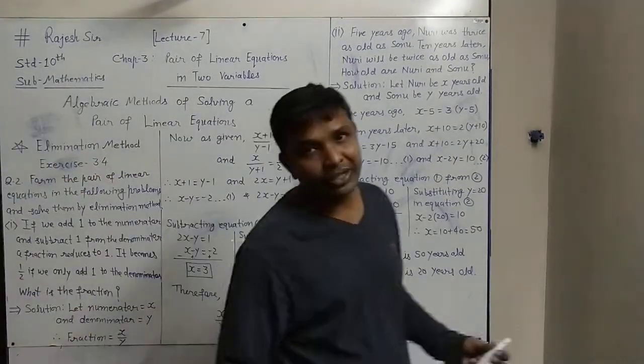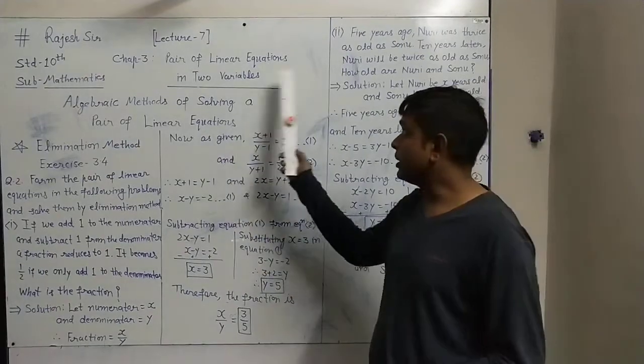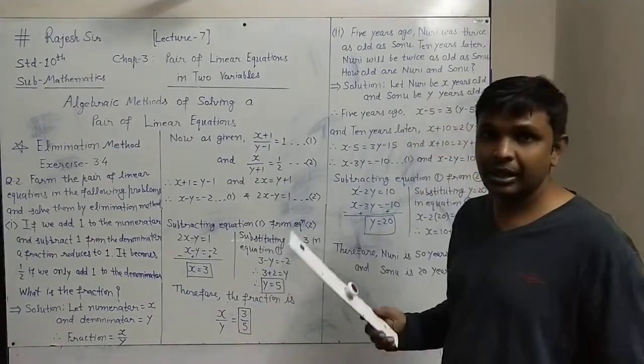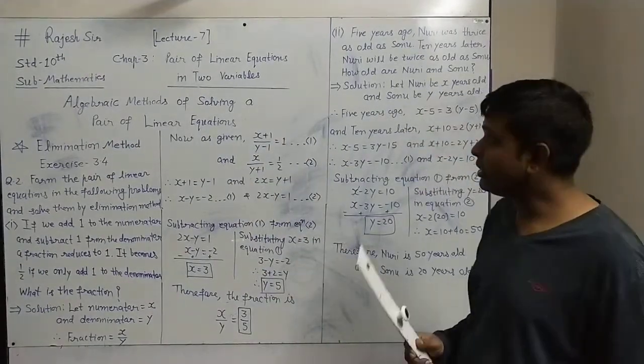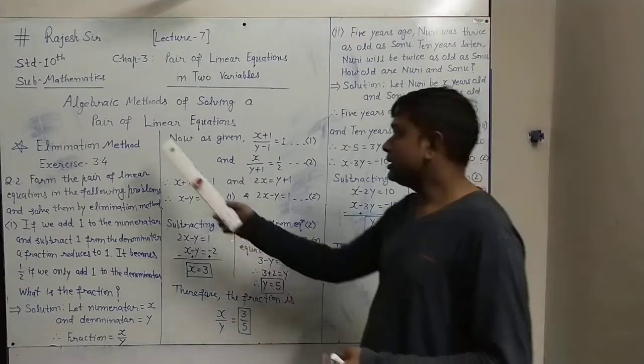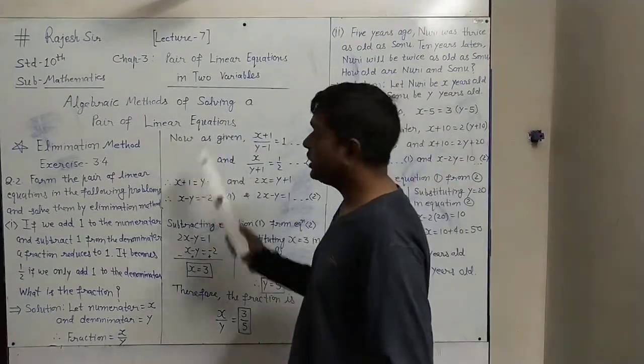Hello students, welcome to Standard Science, Separate Mathematics, Chapter 3: Pair of Linear Equations in Two Variables. This is lecture number 7, and we were on algebraic methods of solving a pair of linear equations.